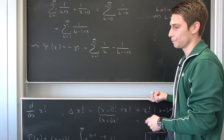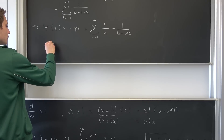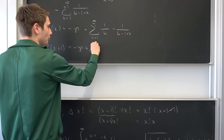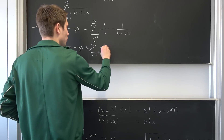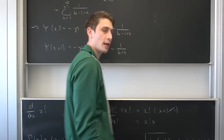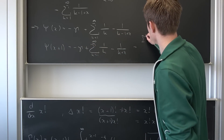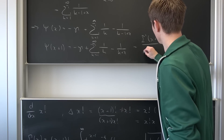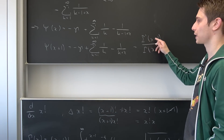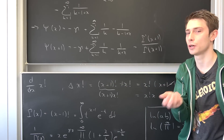Now we can turn this into the derivative of x factorial. Plugging in x+1: ψ(x+1) = −γ + Σ(k=1 to ∞) [1/k − 1/(k+x)]. This is Γ'(x+1)/Γ(x+1), which is just the derivative of x factorial divided by x factorial. Multiplying both sides by x factorial gives you the derivative of x factorial.